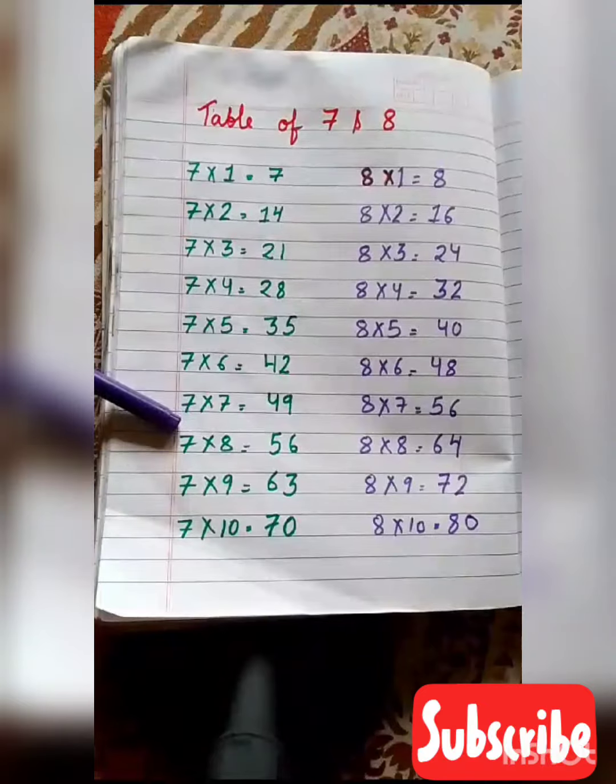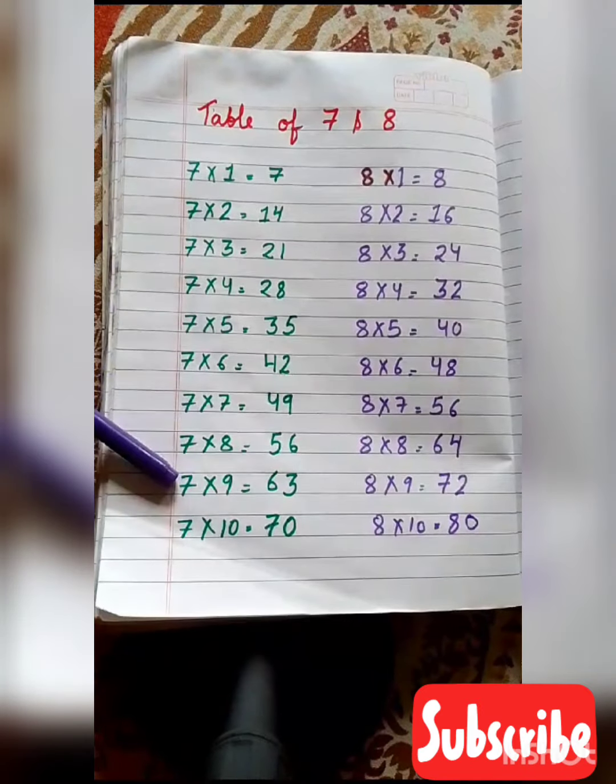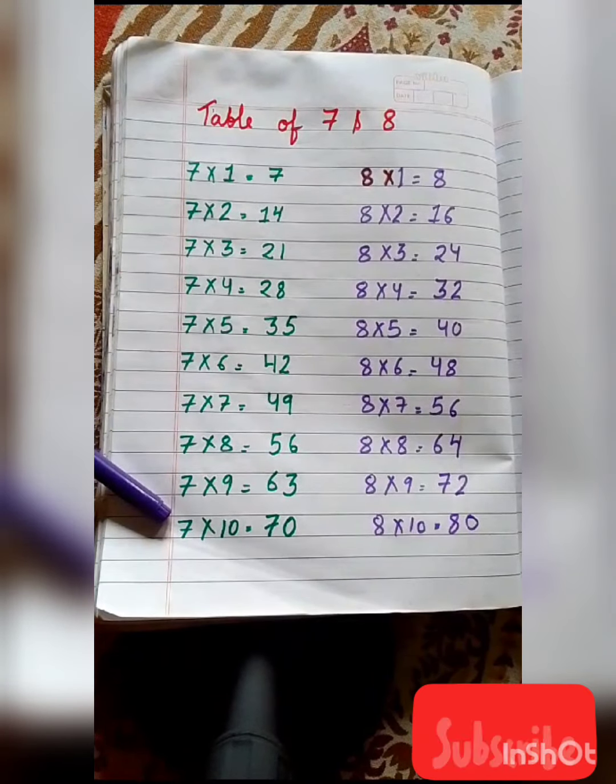7 sevens are 49, 7 eights are 56, 7 nines are 63, 7 tens are 70.